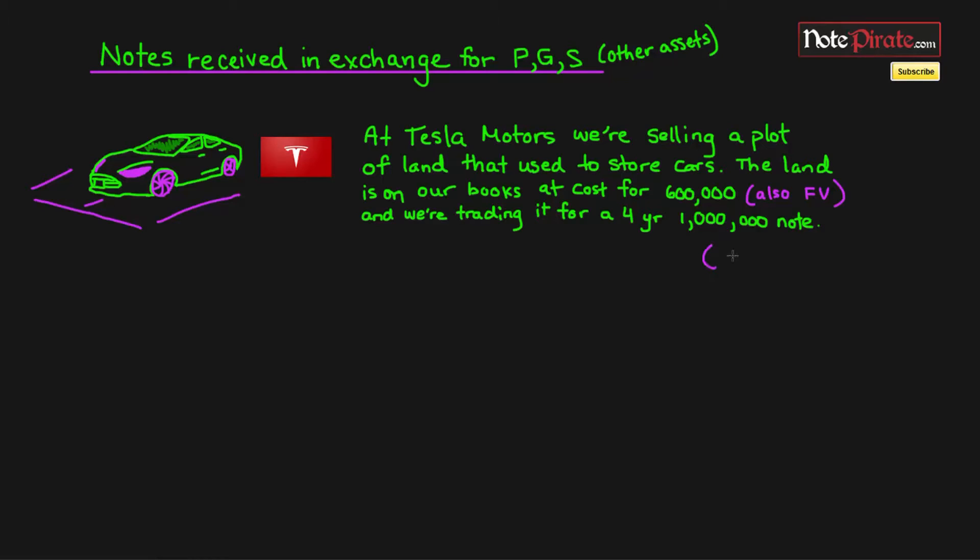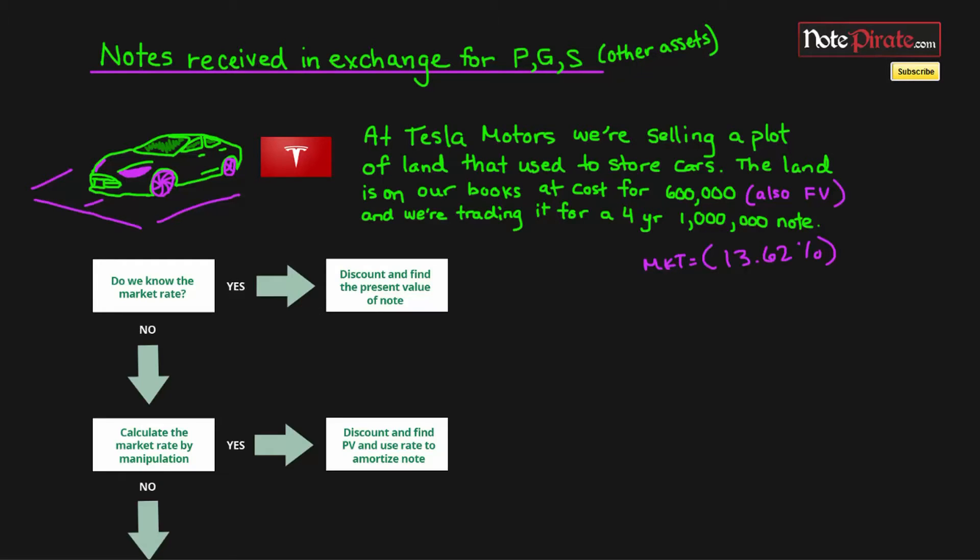The market rate is 13.62 percent. While we write out these journal entries, I figured I would also provide a flowchart to make this much easier, so you can work your way down it. To start off, do we know the market rate? In this case we definitely do know the market rate or the effective rate, so we can discount and find the present value.